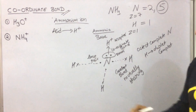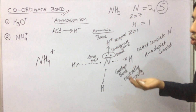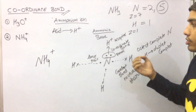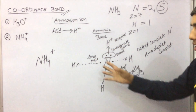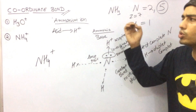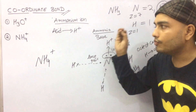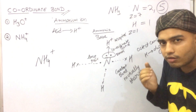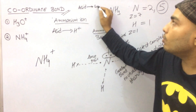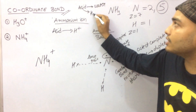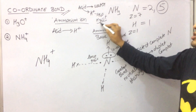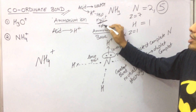So in NH4+ there are three covalent bonds and one coordinate bond. We write the formula as NH4+ because we really don't know where the plus charge is — you cannot distinguish which bond is the coordinate bond and which is the covalent bond in the final structure. Every year in ICSC these questions are asked: either draw the structure of hydronium ion or ammonium ion. When an acid dissolves in water, H+ is produced, but H+ does not exist individually — it combines with H2O to form H3O+, the hydronium ion.